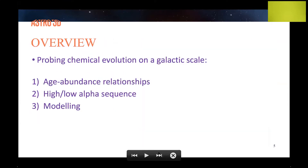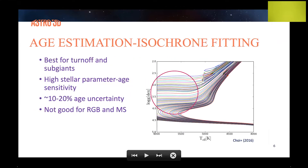For my talk today I'll give a brief overview of chemical evolution on the galactic scale, covering three main things: age-abundance relationships, the high and low alpha sequence, and a little bit about modeling. To derive stellar ages I use a method called isochrone fitting. Isochrones are models of equal time on the HR diagram — each line represents a star at a given age. This method is best for turnoff subgiants, where the isochrones are nicely spaced out, giving fairly high age sensitivity. I can get down to about 10-20% uncertainty.